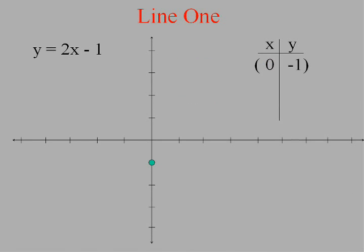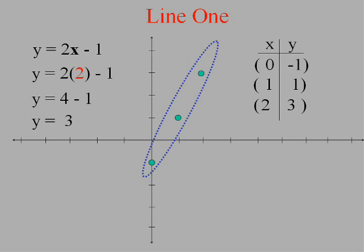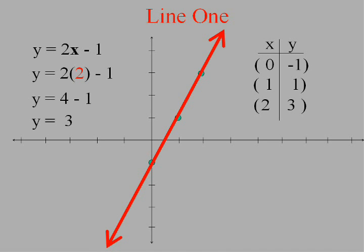I graph the point by going over none and down 1. Let's put in another number for x, we'll put in 1 for x and 2 times 1 minus 1 will equal 1. So I'll graph that point by going over 1 and up 1. I'd like to do one more. I'll put in 2. 2 times 2 minus 1 ends up being 3. I'm going to go over 2 and up 3. I know I'm okay because they line up.